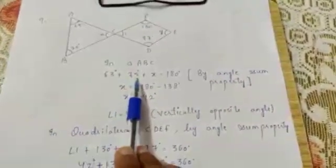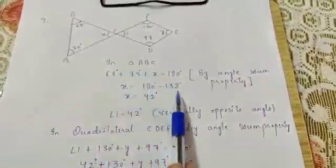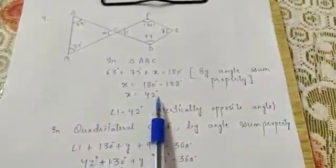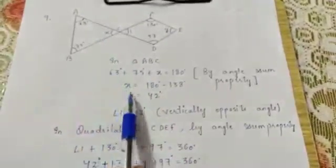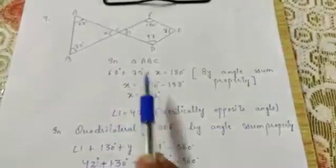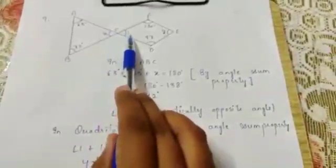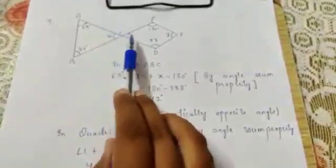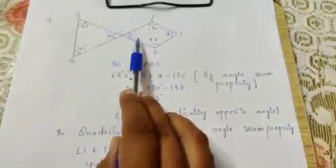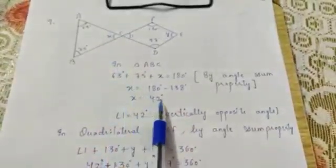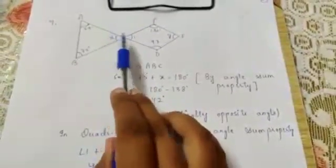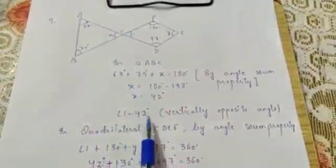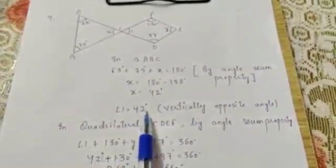63 + 75 = 138. Taking 138 to the other side, x = 180 − 138 = 42 degrees. So angle 1 is equal to x, which is 42 degrees. Both these angles are equal because they are vertically opposite angles. So the value of angle 1 is also 42 degrees.